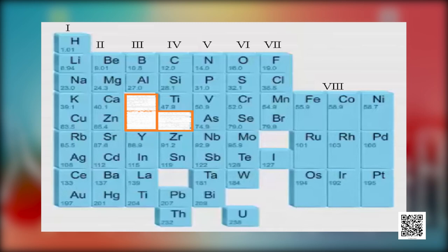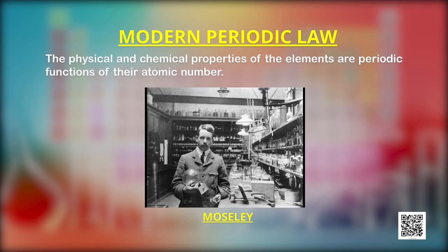These elements were discovered later and mostly showed that the atomic number is a more fundamental property of an element than its atomic mass. Mendeleev's periodic law was accordingly modified. This is known as the modern periodic law, which states: the physical and chemical properties of the elements are periodic functions of their atomic numbers. A modern version, the so-called long form of the periodic table, is the most convenient and widely used.